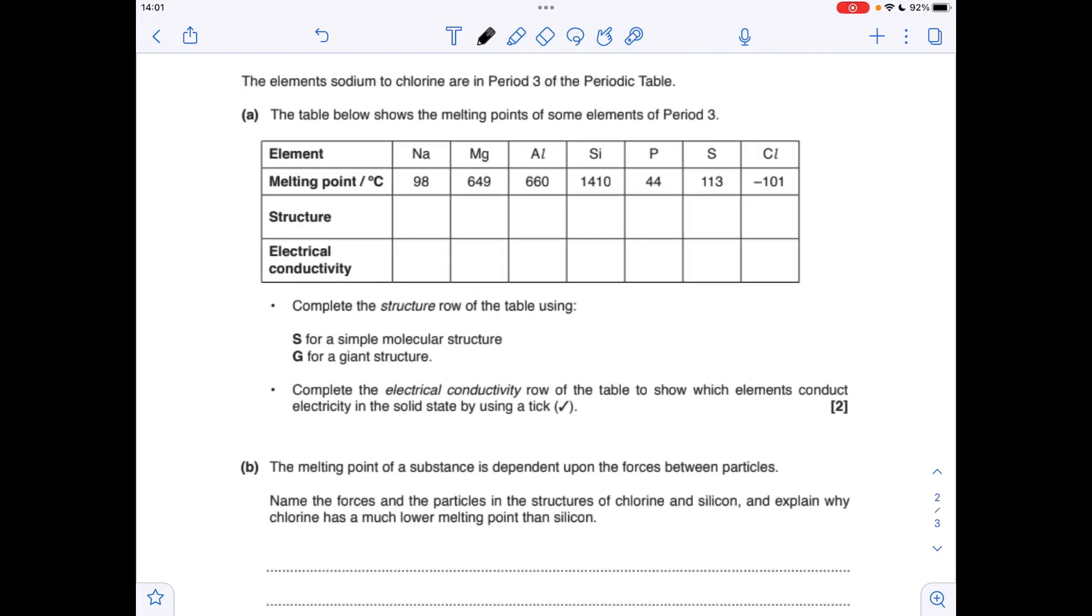We've got another table to fill in for the next question. The first thing we'll do is look at the structure. Our option is S if it's simple molecular, or G if it's giant. Sodium, magnesium, and aluminium—they're all metals, so they have a giant metallic structure, so we obviously need G in those three boxes. Silicon has a giant covalent structure, so another G needed there. And the remaining three are all simple molecular structures, so S, S, S.